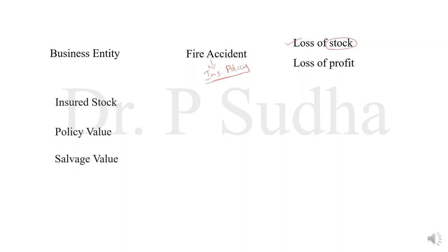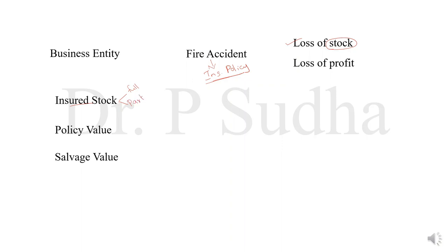The other important terms you should know: insured stock is the amount for which the policy has been taken — the portion of the stock for which the policy has been taken. The insured stock can be either full insurance, where all the stocks are insured, or only a part of the stock is insured, which is partial insurance. If only a part of the stock is insured, this is called the average clause.